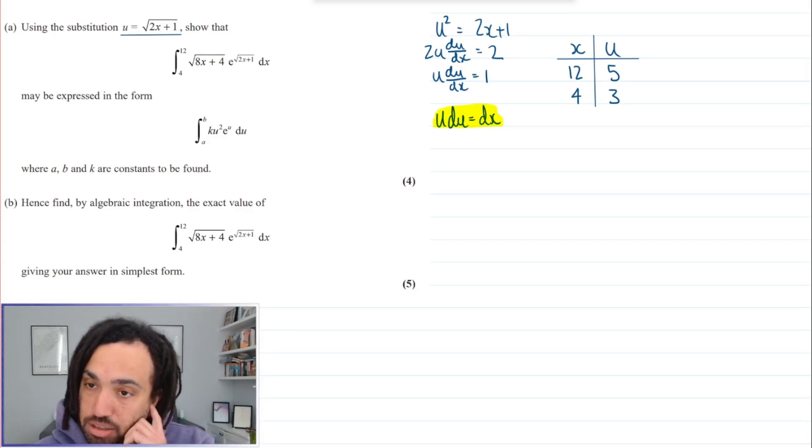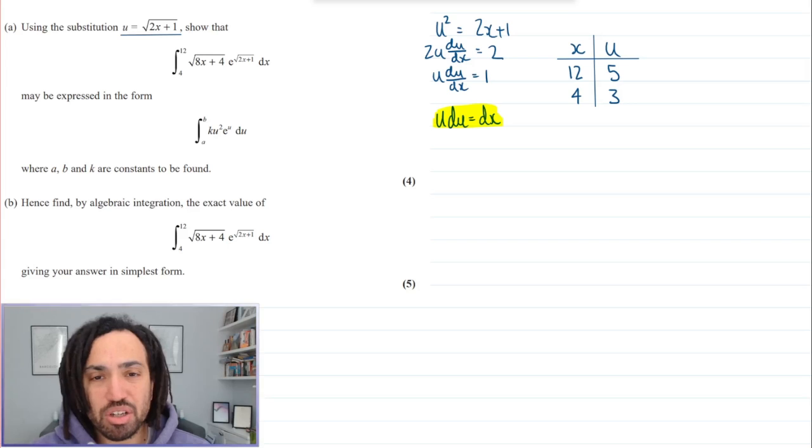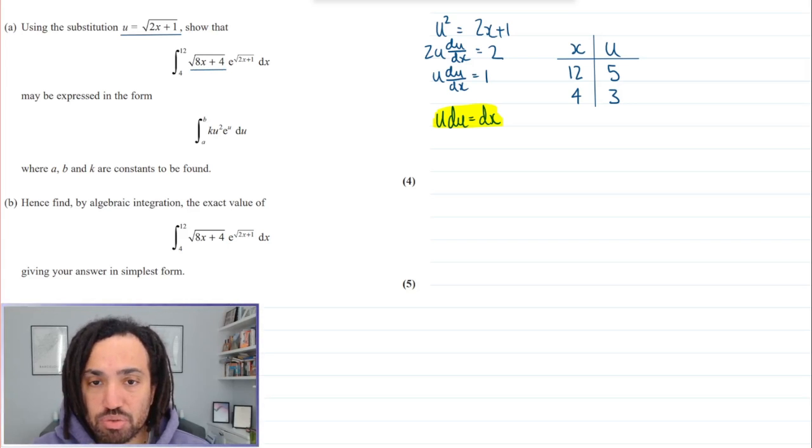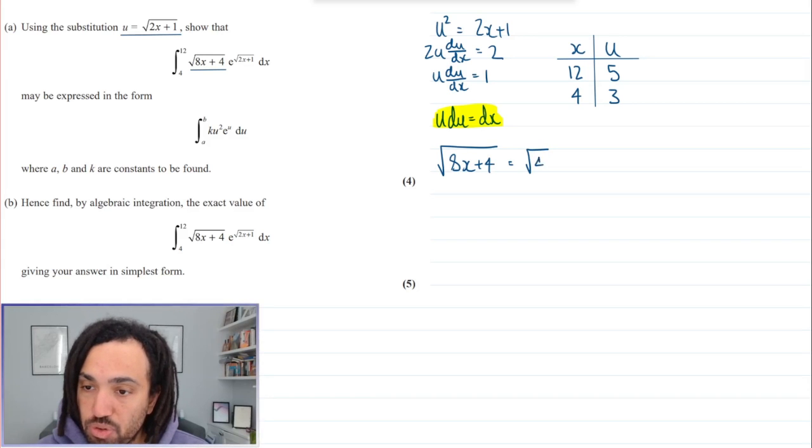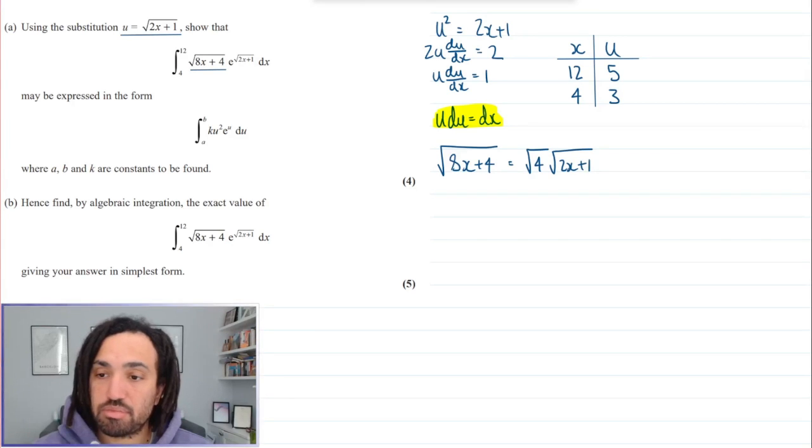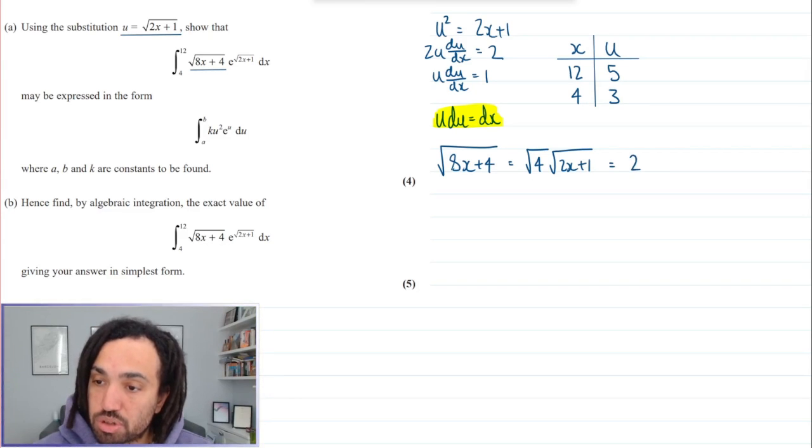Okay fantastic. What else am I going to do? Well I'm going to look here - I can see this is the square root of 8x plus 4, so I have to do a little bit of tidying up with that. The square root of 8x plus 4 is the same as the square root of 4 times by the square root of 2x plus 1. This could then be rewritten as 2 lots of the square root of 2x plus 1.